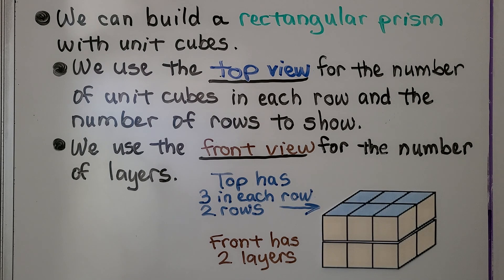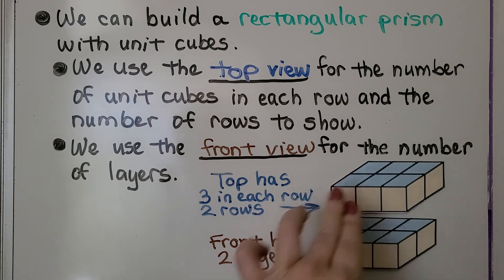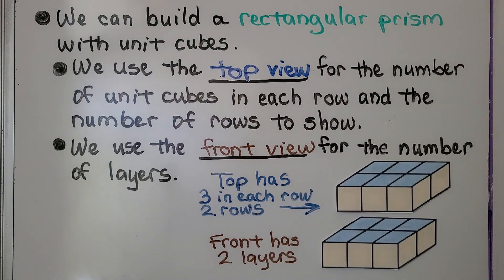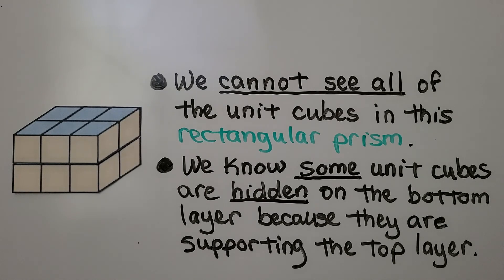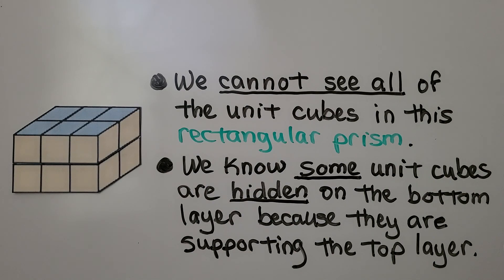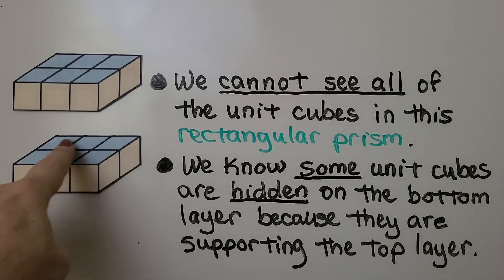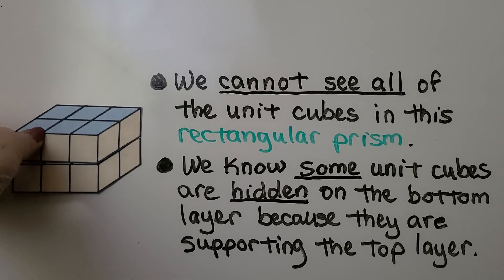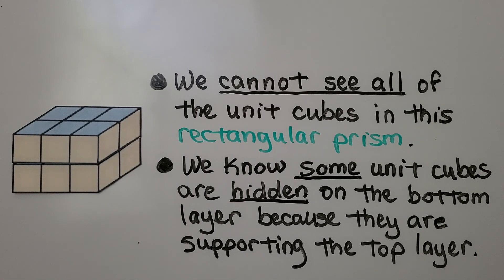We can actually lift up this to show you. See how there's two layers, and they're stacked on top of each other? We cannot see all of the unit cubes in this rectangular prism. We know some unit cubes are hidden on the bottom layer because they're supporting the top layer. So imagine if this cube wasn't there, this one would fall down. This one is supporting the one on top of it, so we've got a lot of them that are hidden.